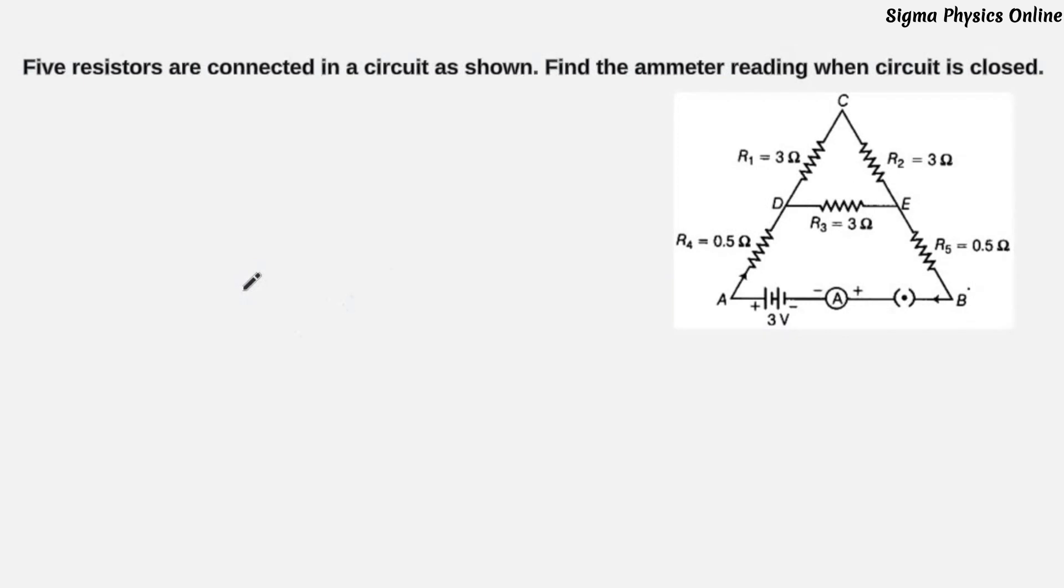There are five resistors having different values and we'll have to find out the ammeter reading when the circuit is closed. Though this is a complicated looking circuit, yet it's very simple.